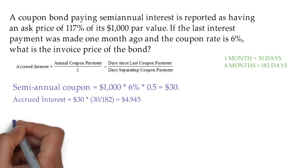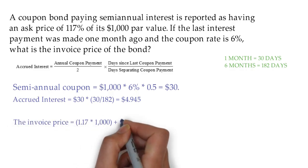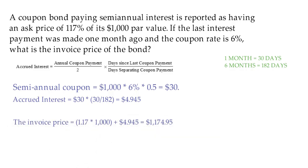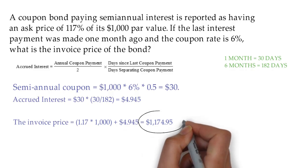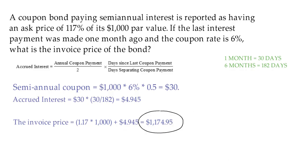Since the ask price of the bond is 117% of par value, the invoice price would be 1.17 times $1,000 plus the accrued interest. Once you multiply and add those numbers, you get $1,174.95. So the bond's invoice price, or the dirty price, is $1,174.95.